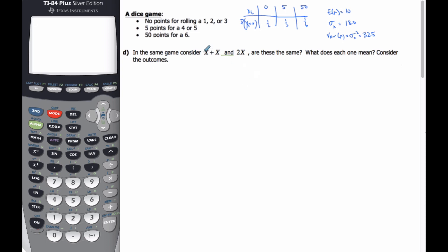So now we're going to discuss the idea of X plus X versus 2X in terms of random variables and their algebra. Reconsider this game that we talked about in an earlier video. Here's our probability distribution table. We know the expected value is 10, the standard deviation is 18.0, and the variance is 325. And I want to consider what's the difference between X plus X and 2X.